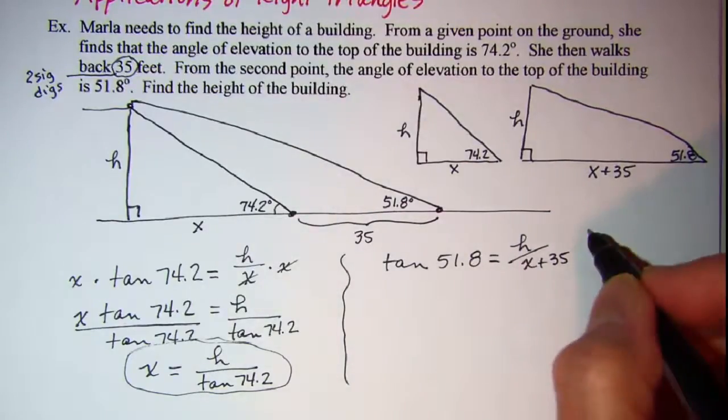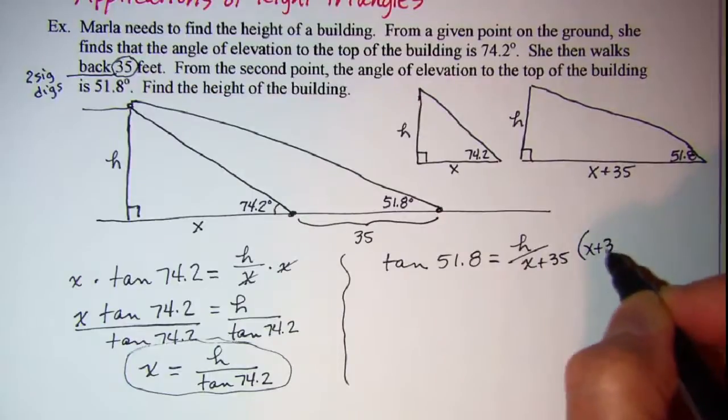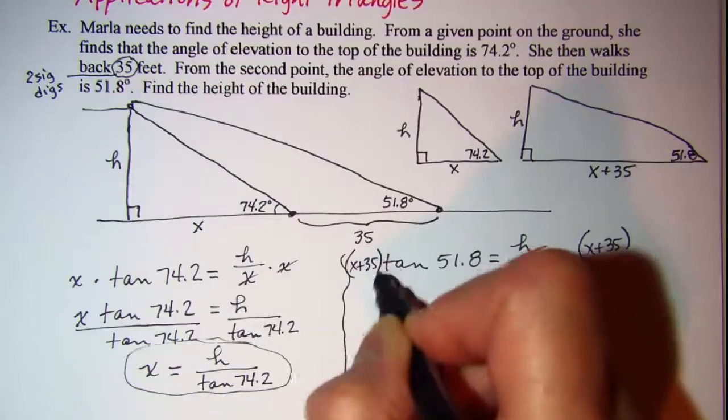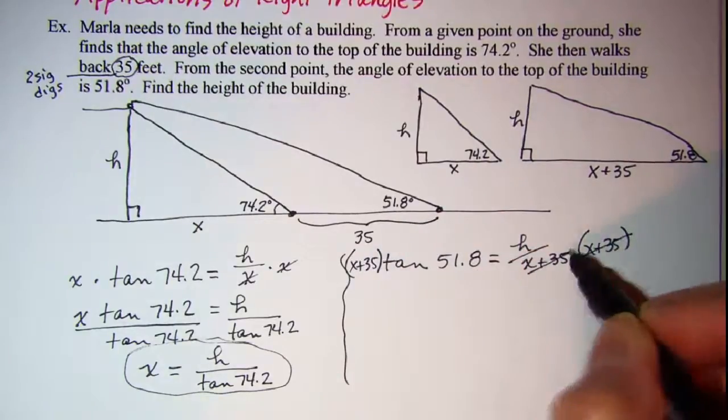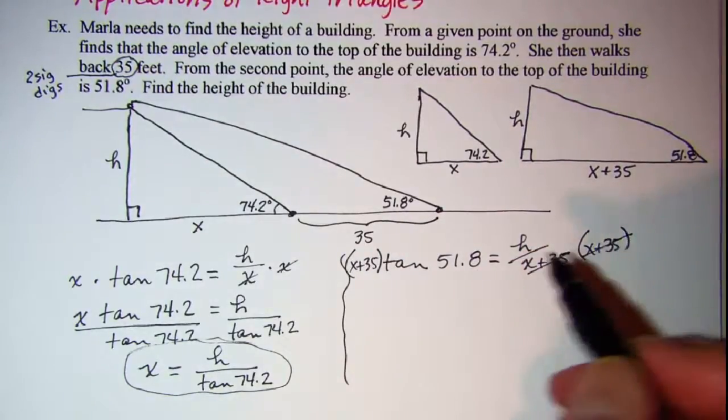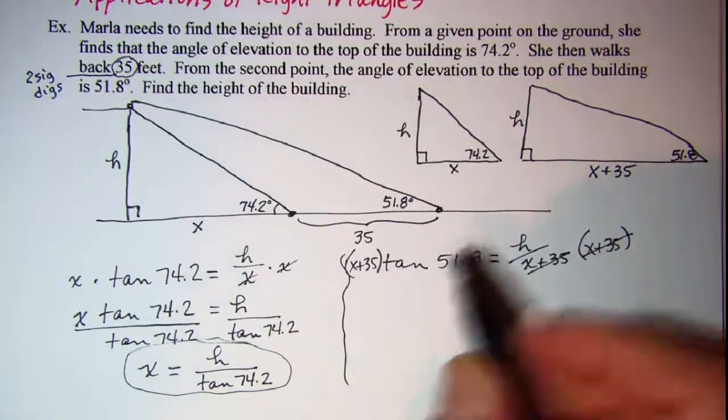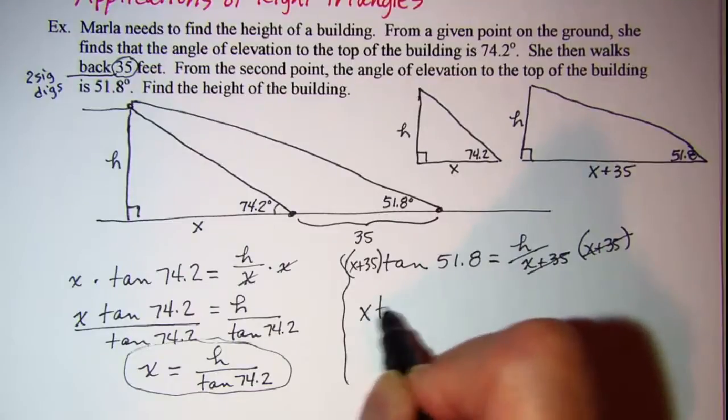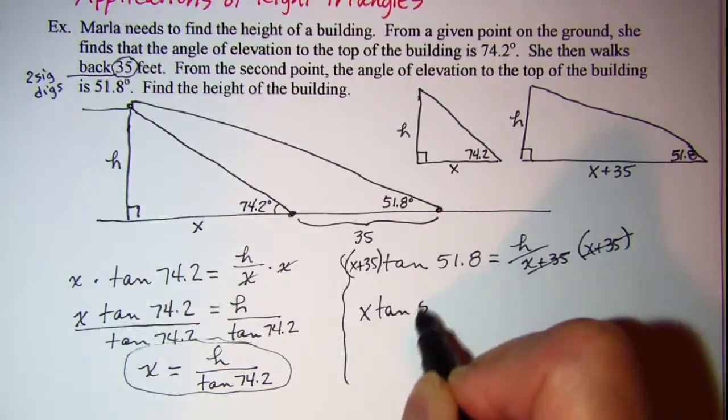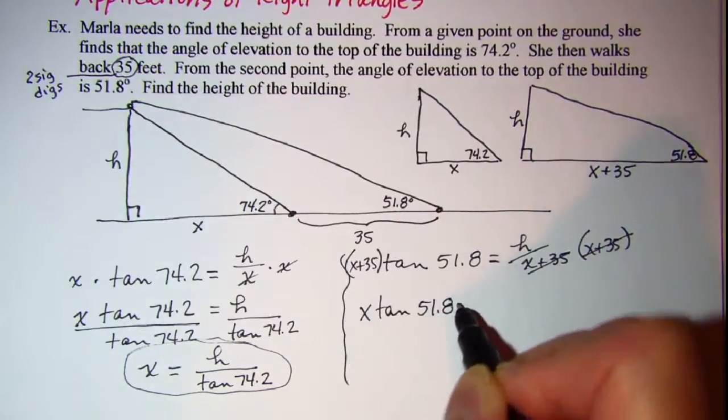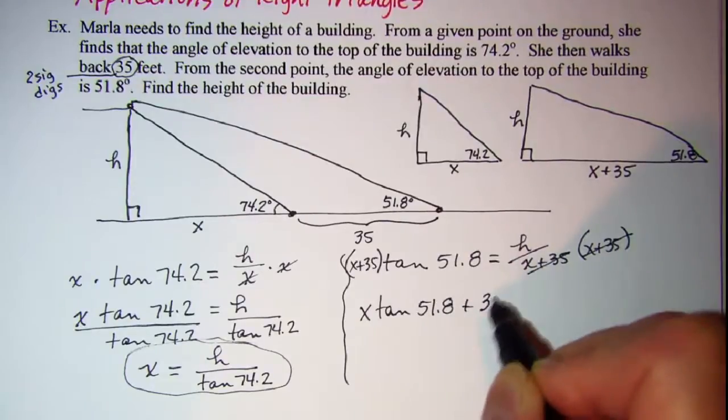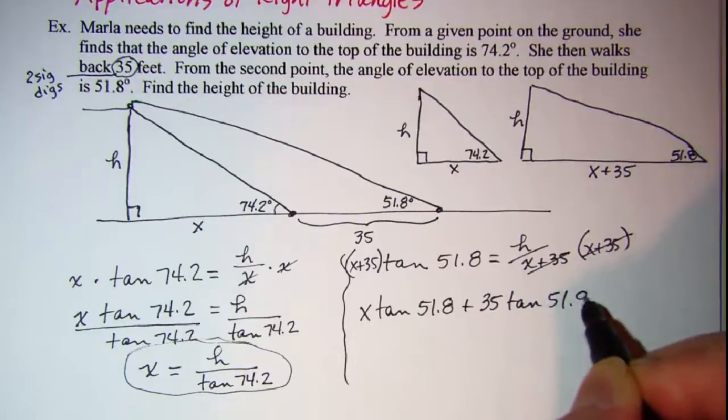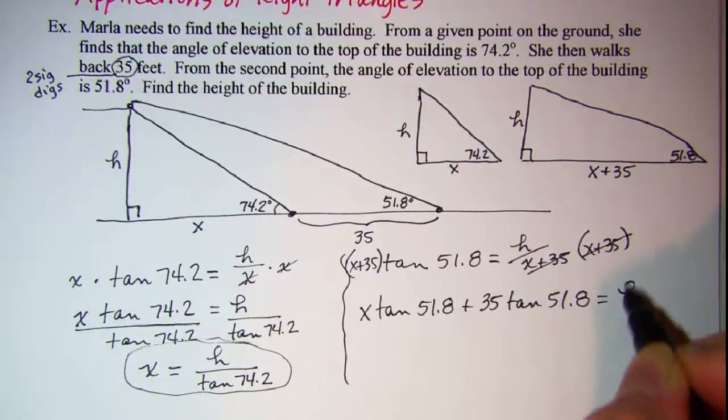Multiply both sides by X plus 35. These will cancel and let's go ahead and distribute tangent 51.8. So I have X tangent 51.8 plus 35 tangent 51.8 equals H.